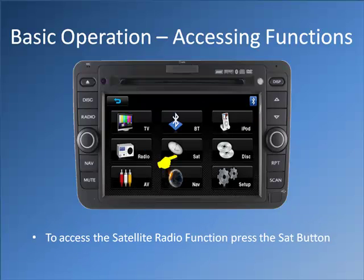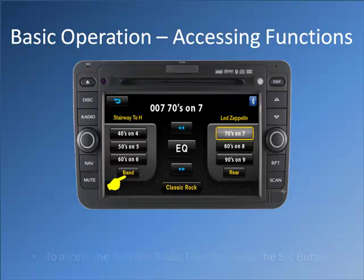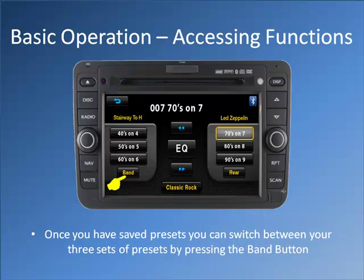To access the satellite radio function, press the sat button. Once you have saved presets, you can switch between your three sets of presets by pressing the band button.